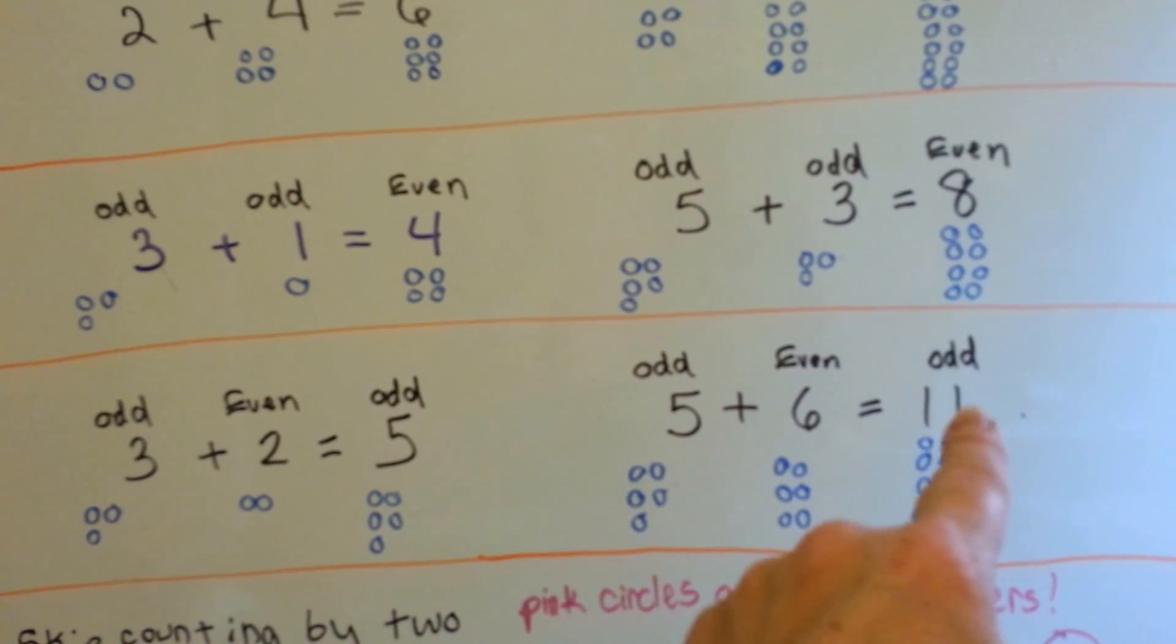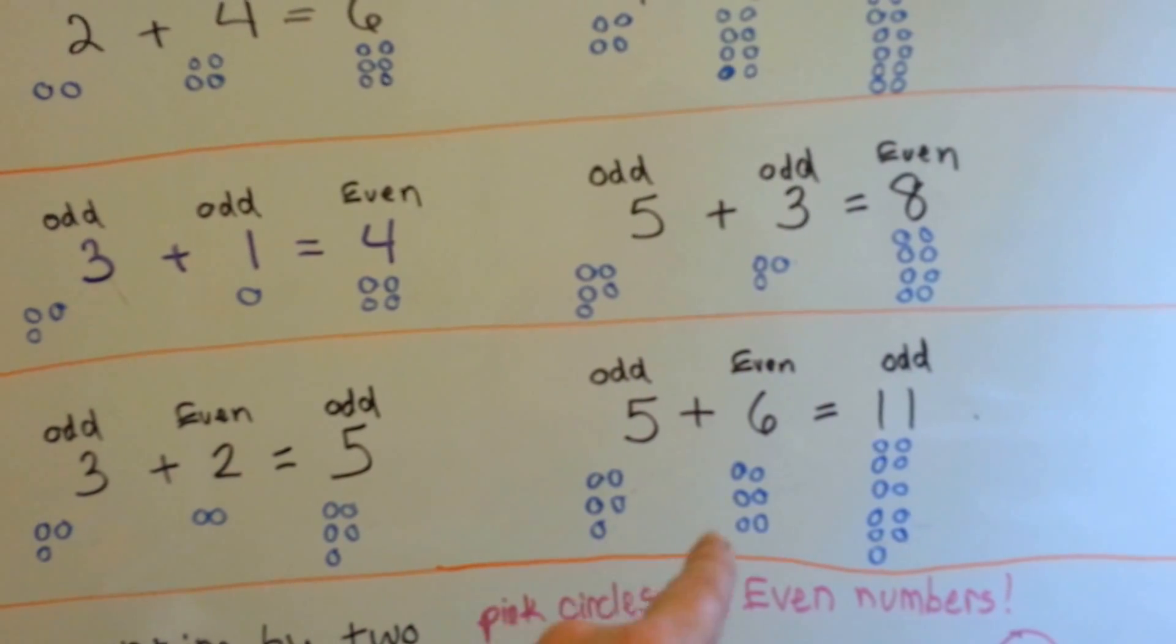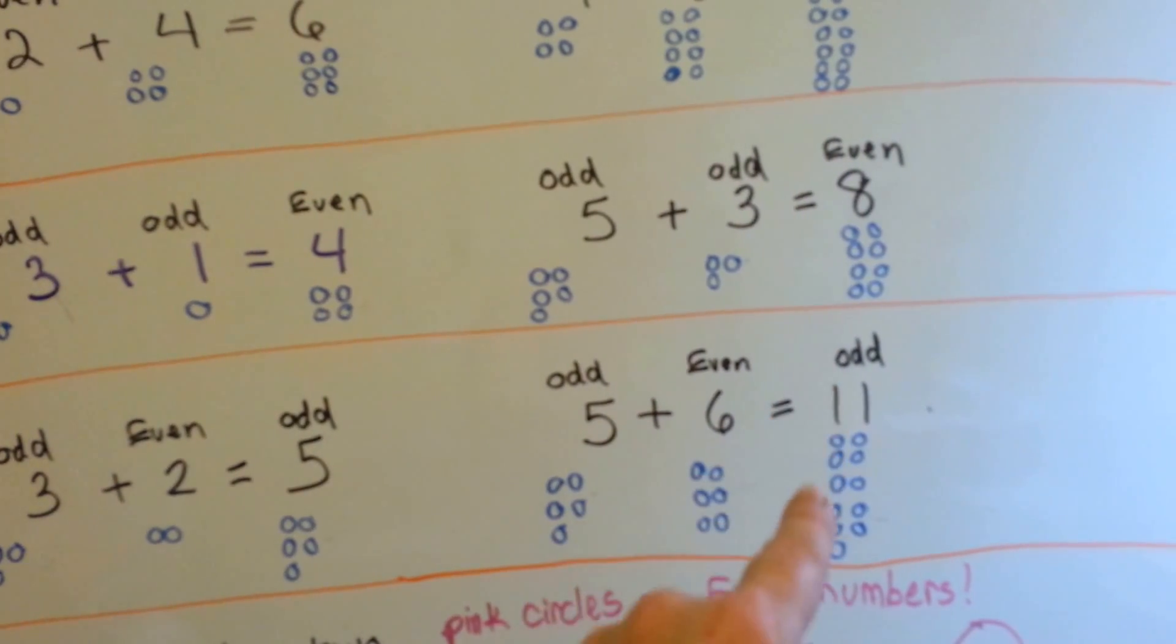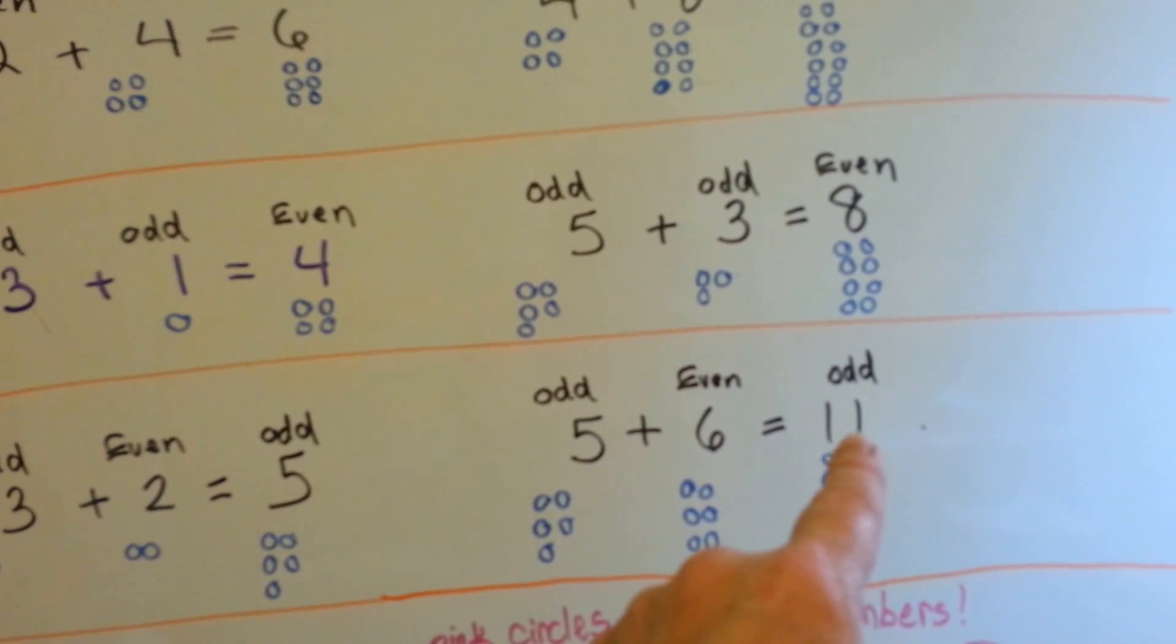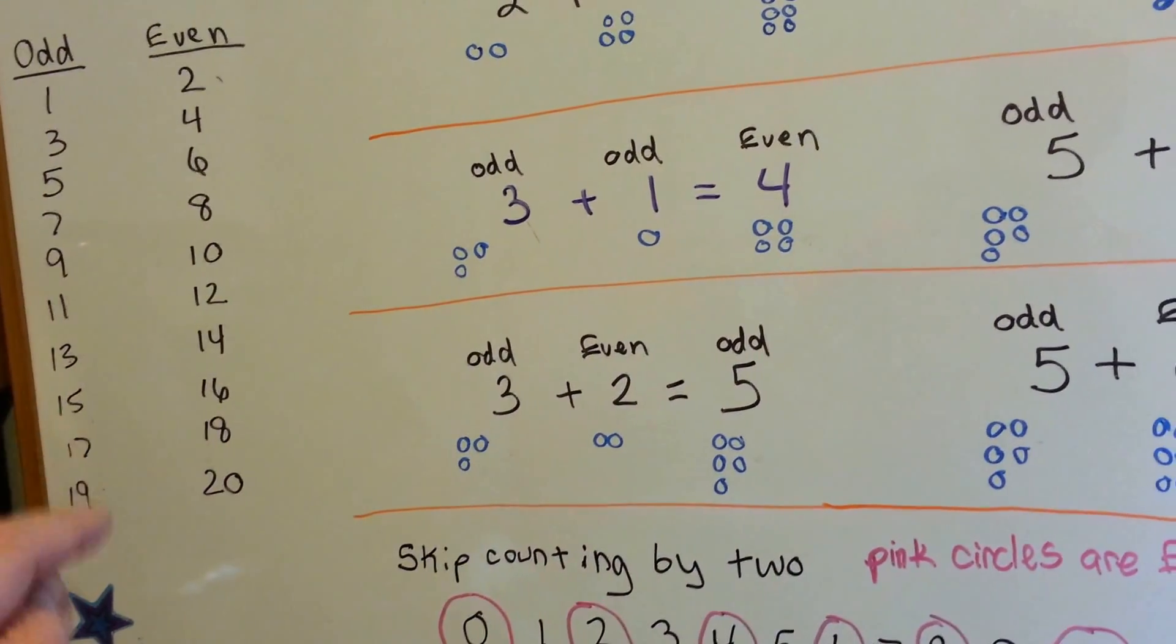5 plus 6 equals 11. 5, that one's missing its friend, plus 6 is even, because they each have a friend, is an odd number of 11. So not only does it not have a friend here, but it ends in a 1. And remember what I said? If it ends in a 1, 3, 5, 7, 9, it's odd,